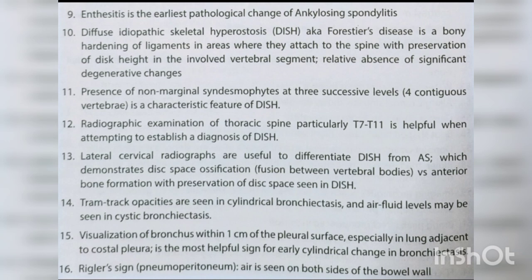Tram-track opacities are seen in cylindrical bronchiectasis; air-fluid levels may be seen in cystic bronchiectasis. Visualization of a bronchus within one centimeter of the pleural surface in lung adjacent to costal pleura is the most helpful sign for early cylindrical change in bronchiectasis. Rigler sign — pneumoperitoneum, air is seen on both sides of the bowel wall. Inverted V sign — pneumoperitoneum, air outlines the lateral umbilical ligament.